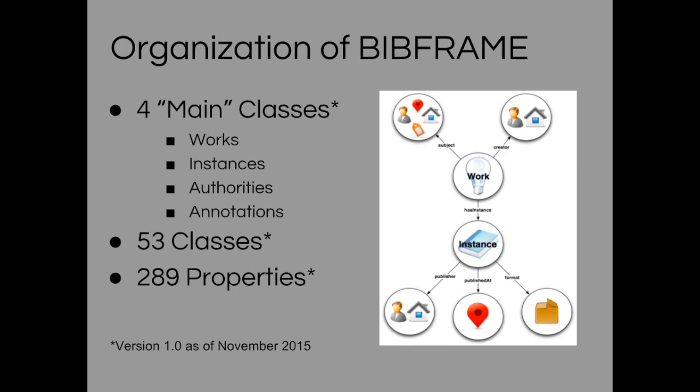BibFrame is broken into four main classes: Works, Instances, Authorities, and Annotations. It has 53 official classes with 289 properties. Classes are the objects and subjects that you want to record the relationships between, while properties are the descriptive elements about classes and the kinds of relationships there are between the classes.